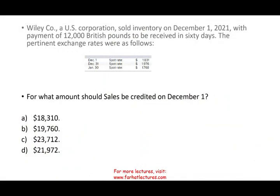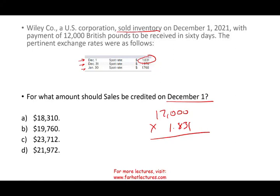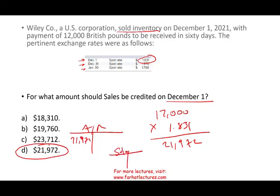Let's take a look at this question. Wiley, a US corporation, sold inventory on December 1st with payment of 12,000 British pounds to be received in 60 days. The exchange rates are as follows: December 1st, December 31st, January 30th. The question is: for what amount should the sales be credited on December 1st? As of December 1st, all we know is the spot rate — $1.831. Therefore, 12,000 pounds times $1.831 equals $21,972. I debit accounts receivable $21,972 and credit sales $21,972.